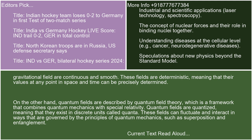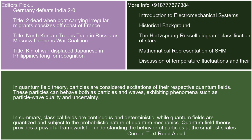On the other hand, quantum fields are described by quantum field theory, which is a framework that combines quantum mechanics with special relativity. Quantum fields are quantized, meaning that they exist in discrete units called quanta. These fields can fluctuate and interact in ways governed by the principles of quantum mechanics, such as superposition and entanglement. In quantum field theory, particles are considered excitations of their respective quantum fields. These particles can behave both as particles and waves, exhibiting phenomena such as particle-wave duality and uncertainty.